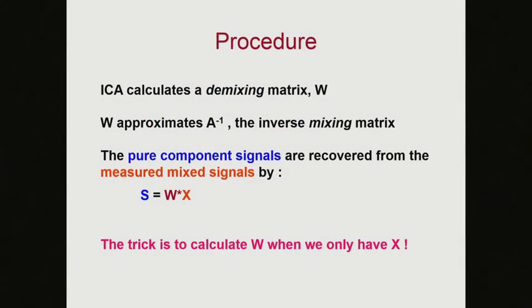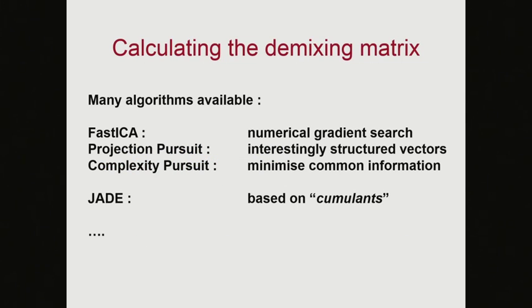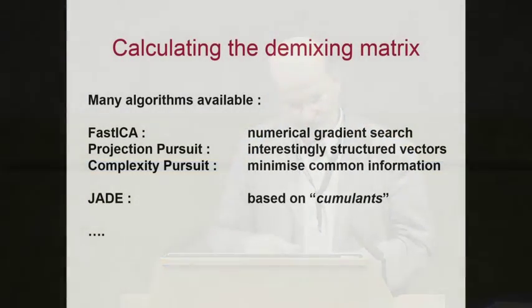To do ICA, you calculate an unmixing matrix W, which is a bit like the inverse of A, the proportions matrix. There are a few problems: there are lots of different algorithms. One that lots of people use is called Fast ICA — the good thing about Fast ICA is the name, everybody thinks it goes quickly. There's a much better method I use called JADE, which mathematically is robust like PCA.